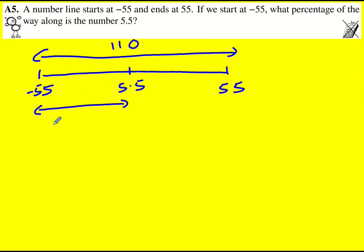So here it's going to be 55 plus 5.5, which I'm going to leave like that at the moment because the fraction of the way along is therefore 55 plus 5.5 all over 110.